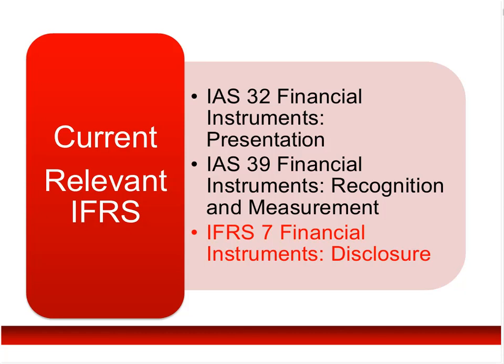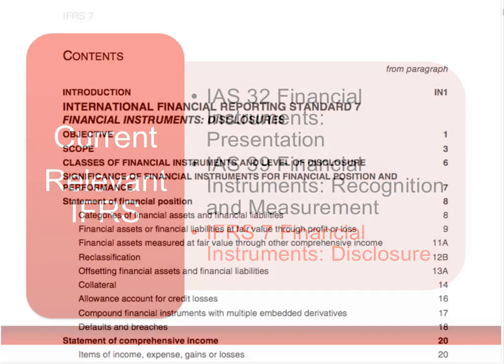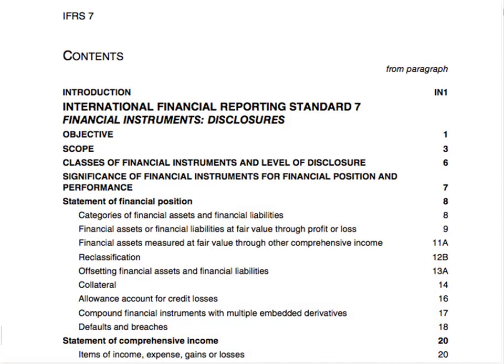When we get the new standard on financial instruments, IFRS 9 — if you want more detail on the disclosures in the slides here today, I would recommend you go and have a look at the standard, have a look at IFRS 7. Additionally, when you're preparing a set of accounts you'll likely be using some sort of IFRS disclosure checklist. I'm not looking to go into massive detail, but to give you an overview of the disclosure requirements.